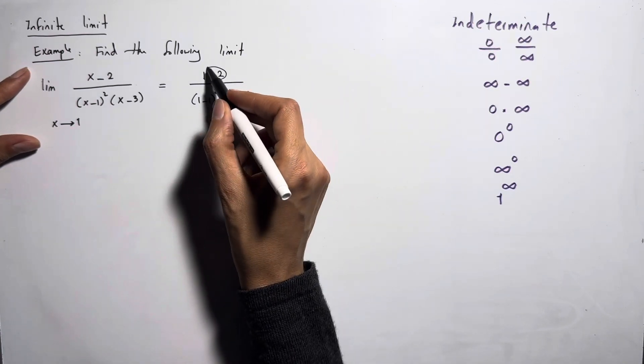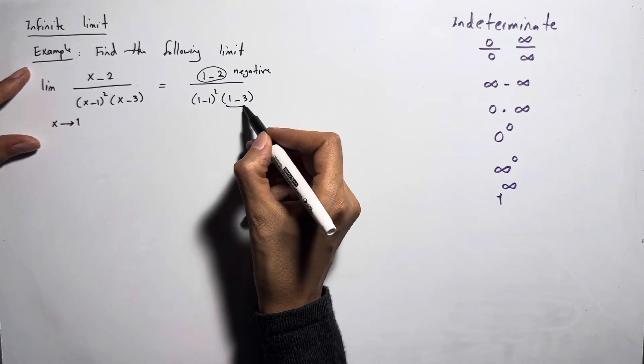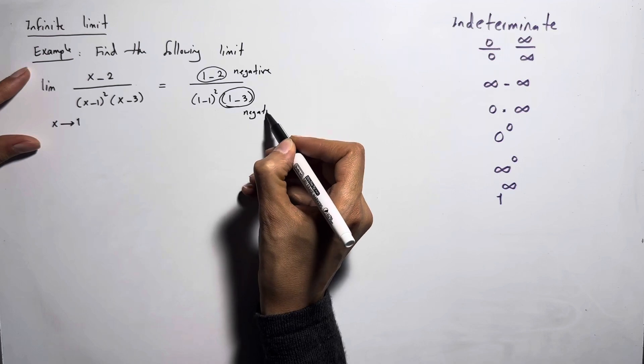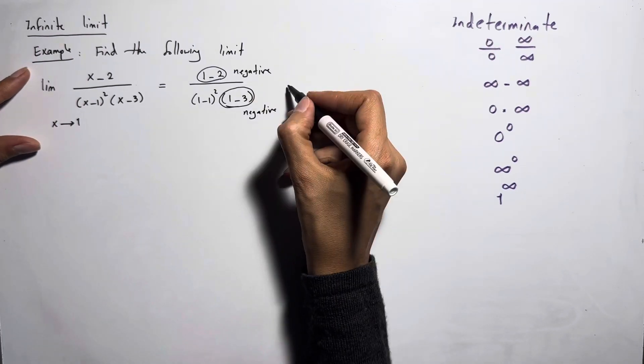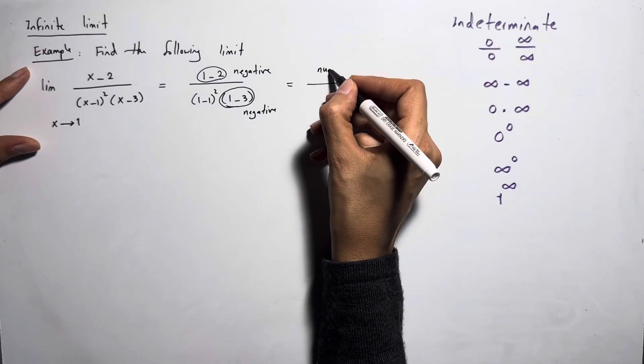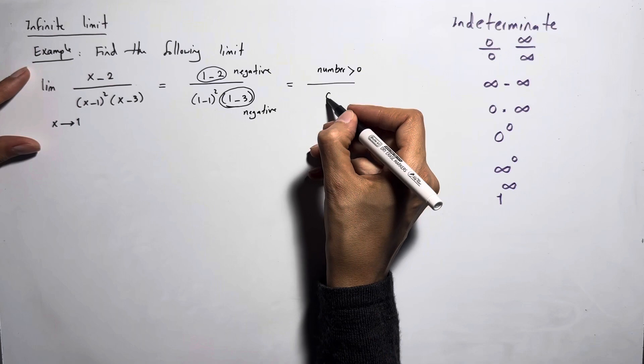You basically have a negative number here. Here you have another negative number down here that makes it positive. So you have a numerical value, a positive number divided by 0.